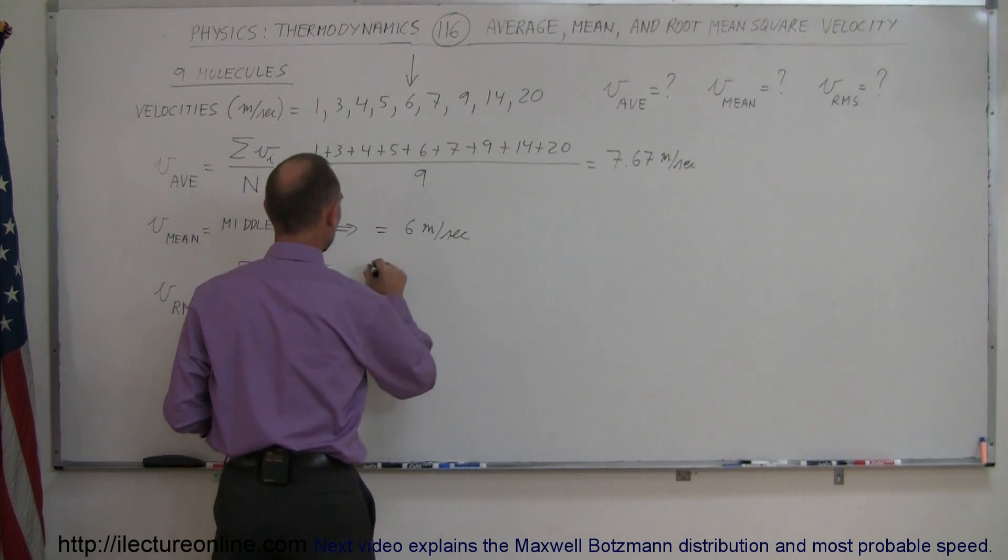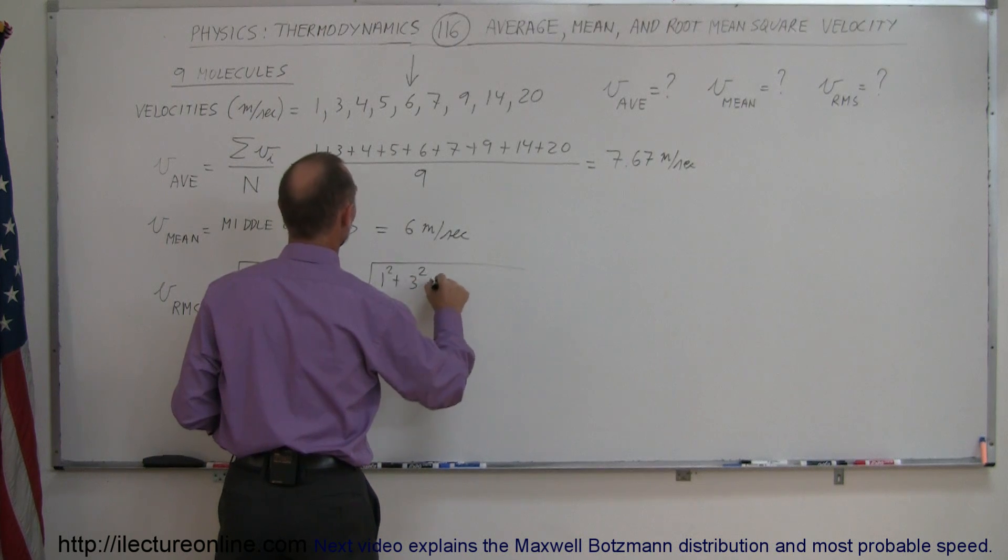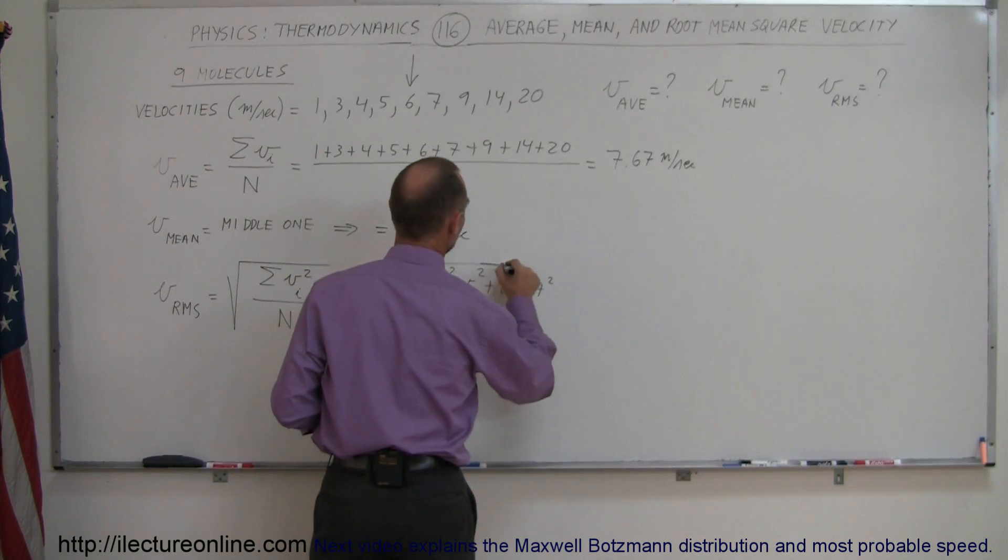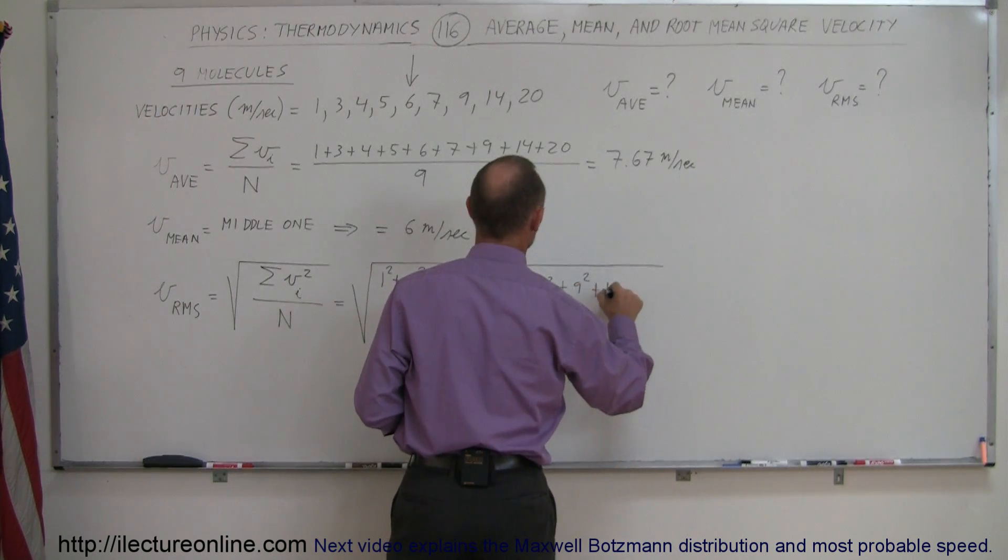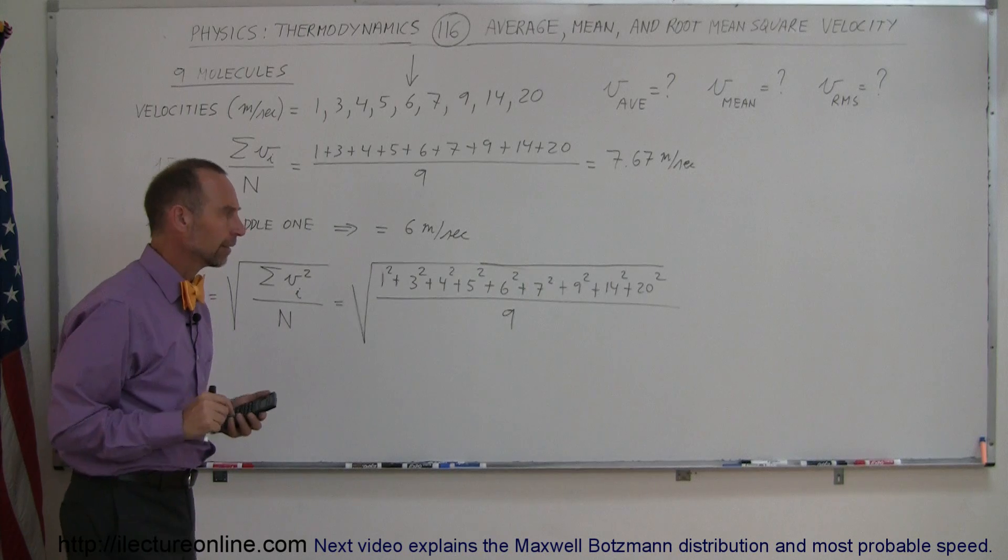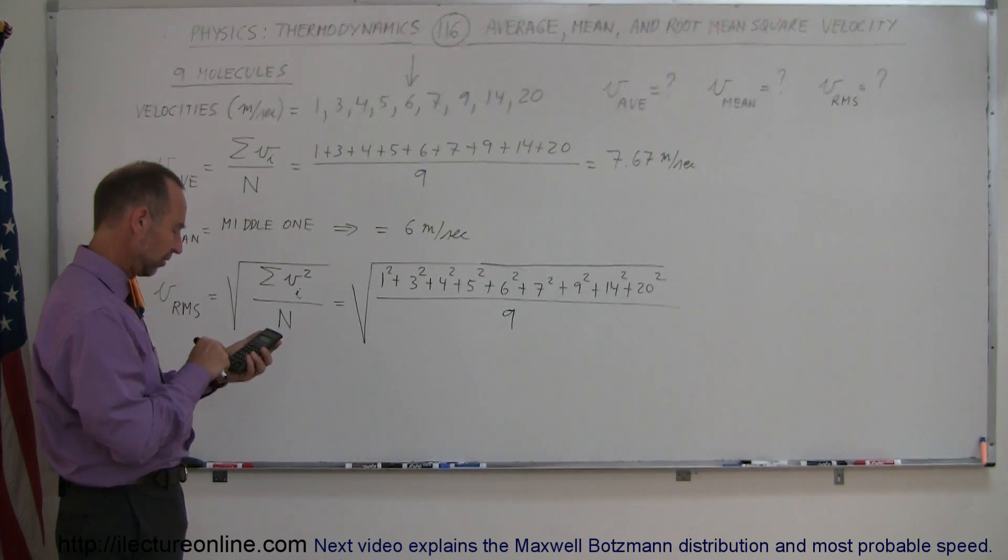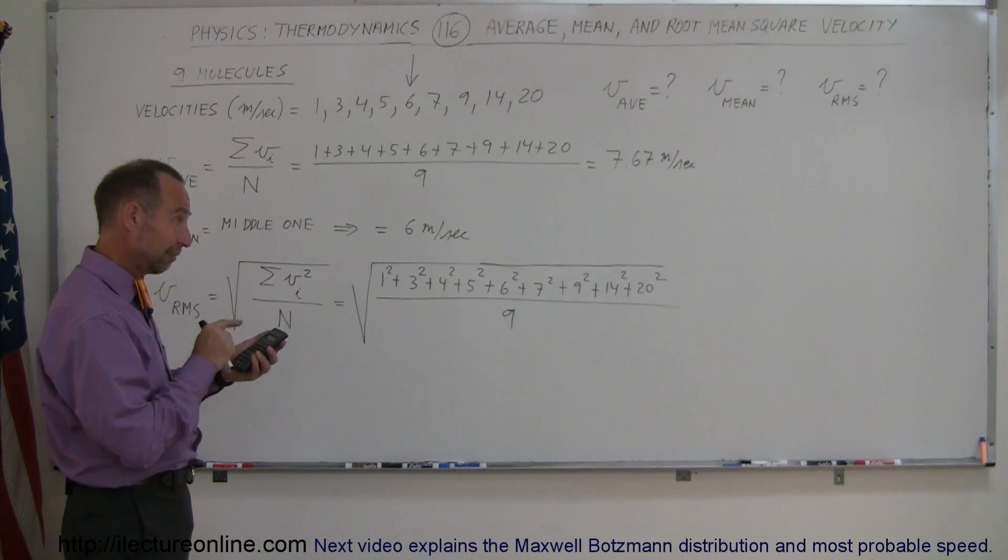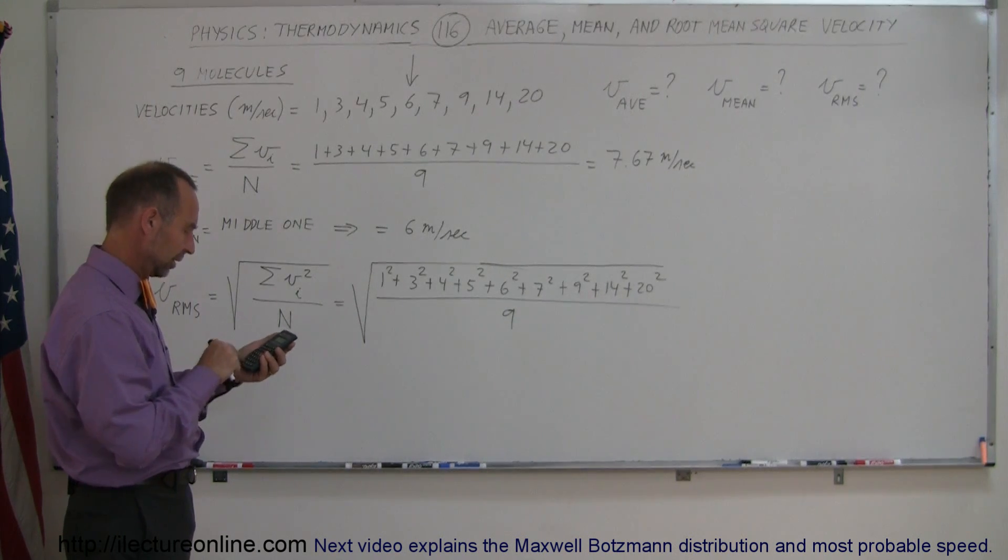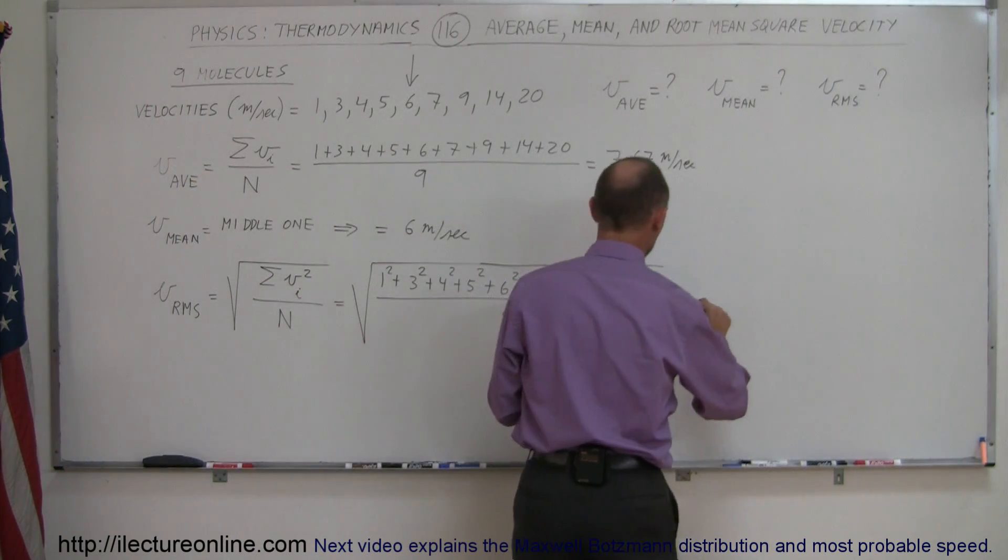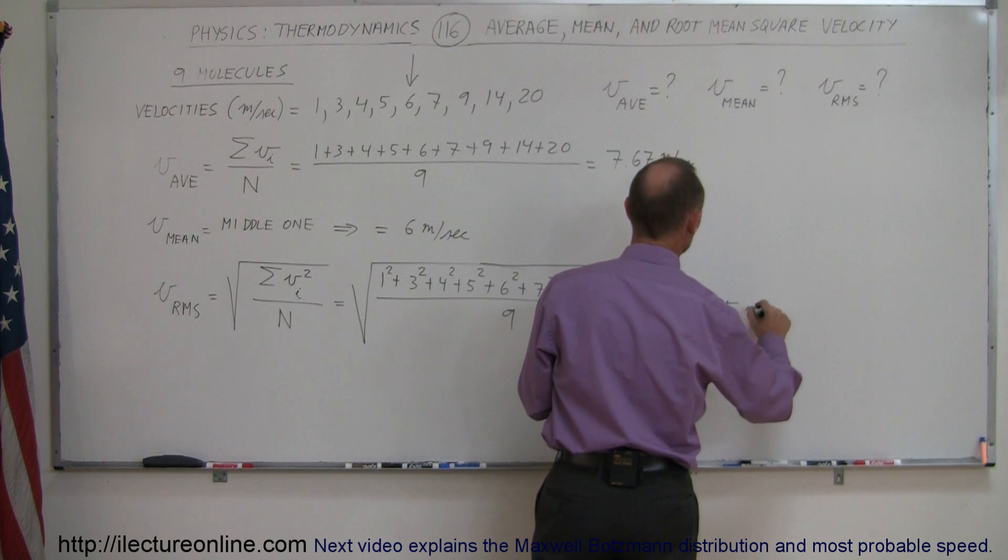We have nine values. So this is equal to the square root of 1² + 3² + 4² + 5² + 6² + 7² + 9² + 14² + 20², all divided by the total number that I have, which is nine. So let's work that one out. That would be 1 + 9 + 16 + 25 + 36 + 49 + 81 + 196 + 400. Divide that by 9, and then take the square root. And there we get the RMS velocity of 9.5 meters per second.